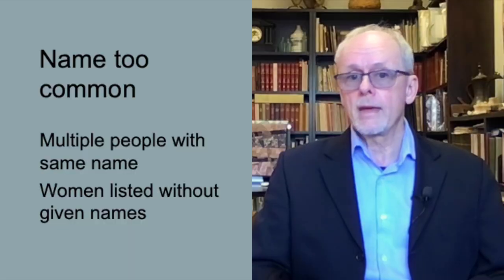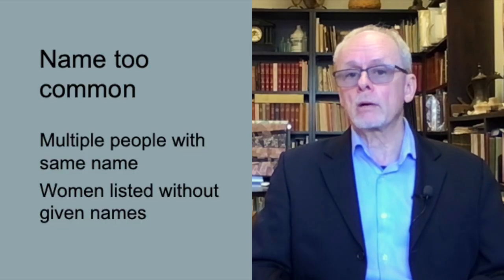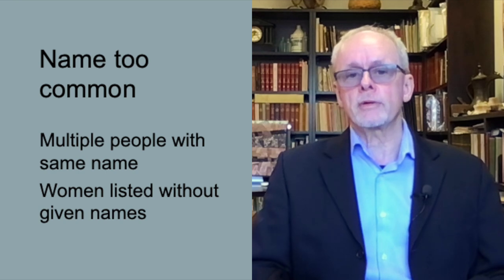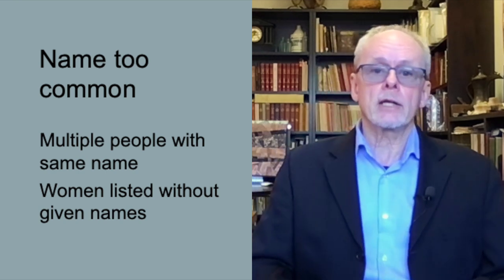Turning to the first problem: names like John Smith or Sarah Brown can be really frustrating because you'll find so many candidates in the documentary record with the same name, even when you know the target individual's birth date. To make matters worse, if you're attempting to research a married woman, she probably won't appear in the directories until after her husband dies, and even then she'll appear as Mrs. Smith or whatever instead of under her full name.